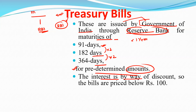The interest is by way of discount. The bills are priced below rupees 100. The interest earned or the benefit earned on the treasury bill is by way of discount, so the bills are priced below Rs. 100.